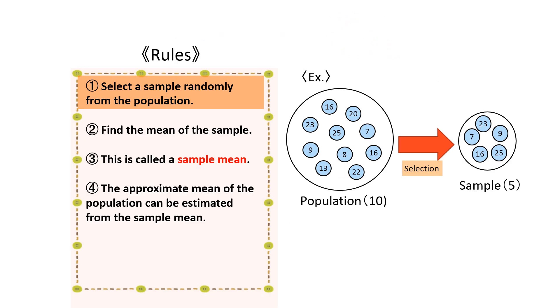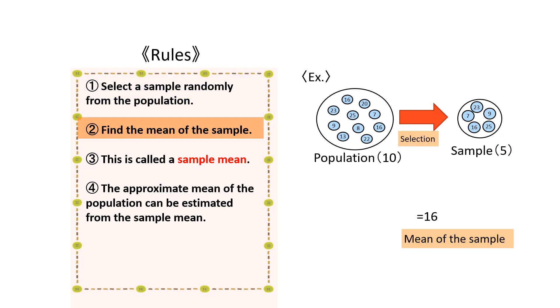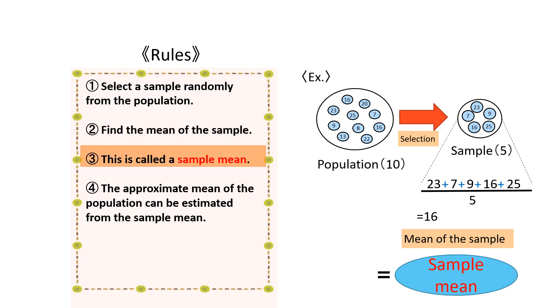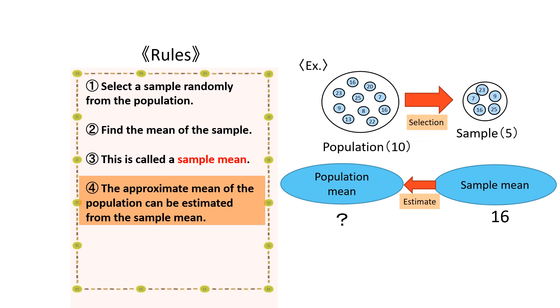Finally, let's review what we have learned. First, select a sample randomly from the population. Next, find the mean of the selected sample. This is called the sample mean. The approximate mean of the population can be estimated from the sample mean.